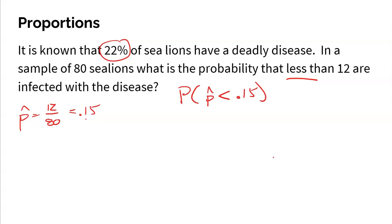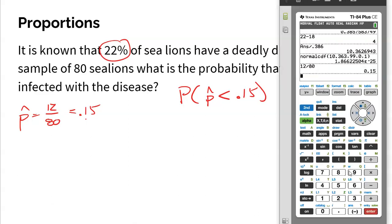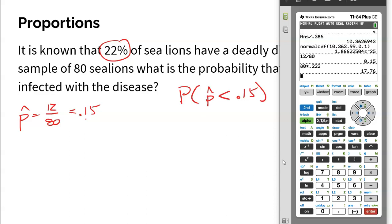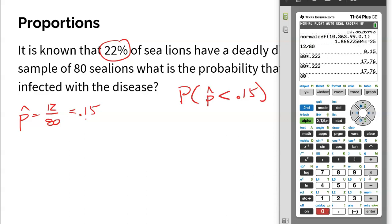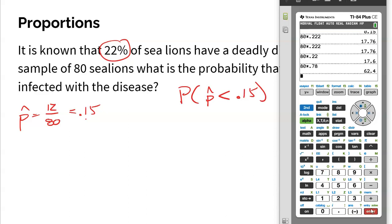Primarily, I need 10 or more successes in my sample. With 80 sea lions and 22% expected to be infected: 80 × 0.22 = 17.6, which is more than 10. The failures — 80 × 0.78 — are also more than 10. As long as both numbers are larger than 10, we can use the normal model here.